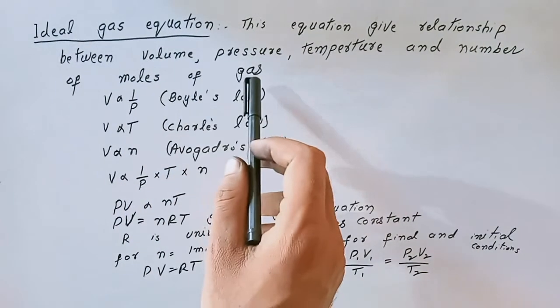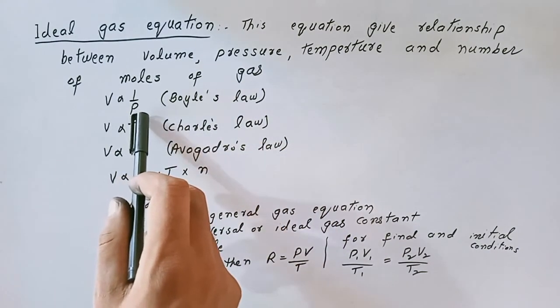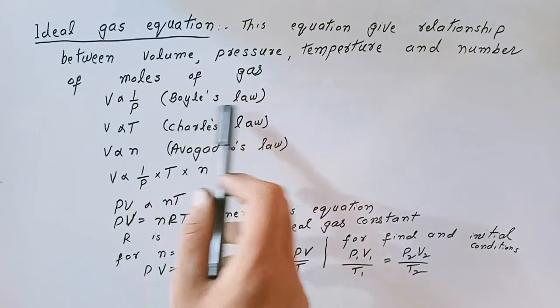Ideal gas equation is used for gas only. Volume is inversely proportional to pressure at constant temperature. This law is called Boyle's law.